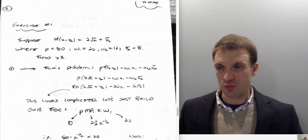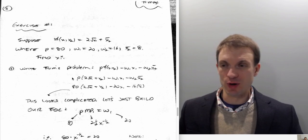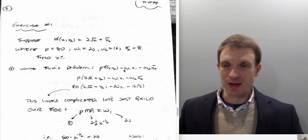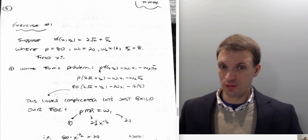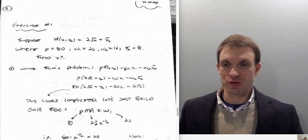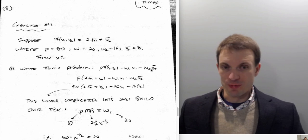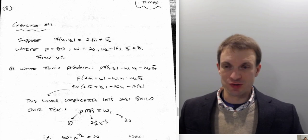We want to find the optimal use of input 1. So I'm going to write down the firm's profit maximization problem. It's going to be P times technology minus omega 1 times x1 minus omega 2 times x2. The first term is the amount of output times the price — you should recognize that as revenue. The omega times x terms are my costs: expenditure on input 1 and expenditure on input 2.